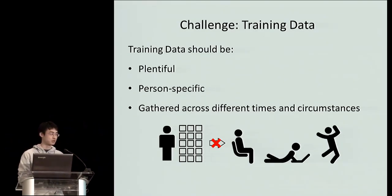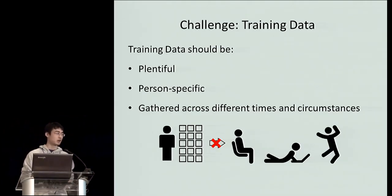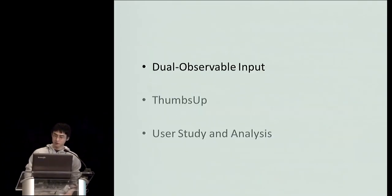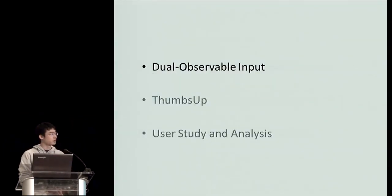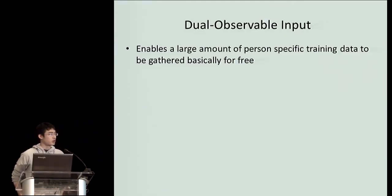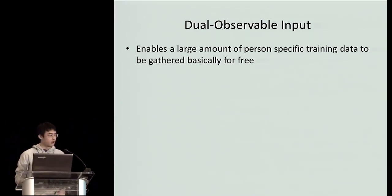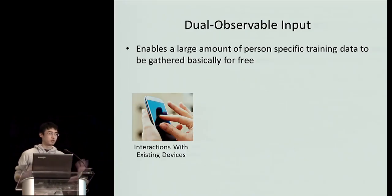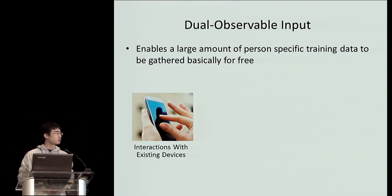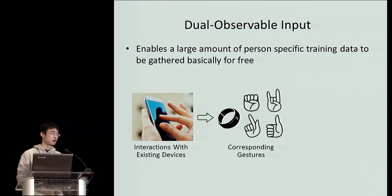Gathering such training data can require a large amount of effort, and requiring users to go through such effort before they could use an EMG device can be a large barrier to adoption. So, we're introducing an innovative new approach for gathering training data that we're calling dual-observable input. Dual-observable input enables a large amount of person-specific training data to be gathered essentially for free. The key insight is that people are actually performing gestures all the time in their daily life, many of which are already being detected by existing devices, and many of which match the gestures that we're trying to recognize.